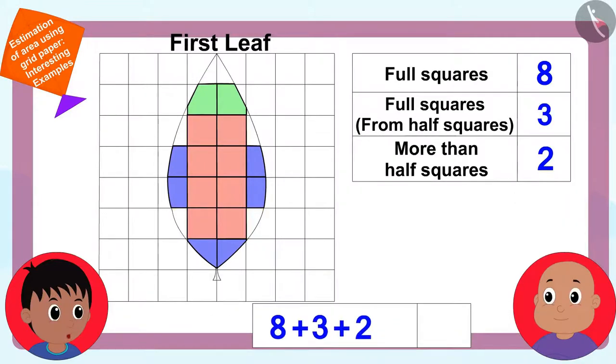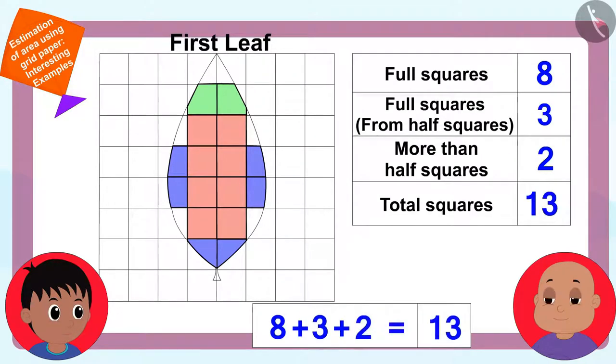Now, look Bablu. The area of the first leaf has a total of eight add three plus two or thirteen squares. In other words, there are thirteen squares in the area of the first leaf.